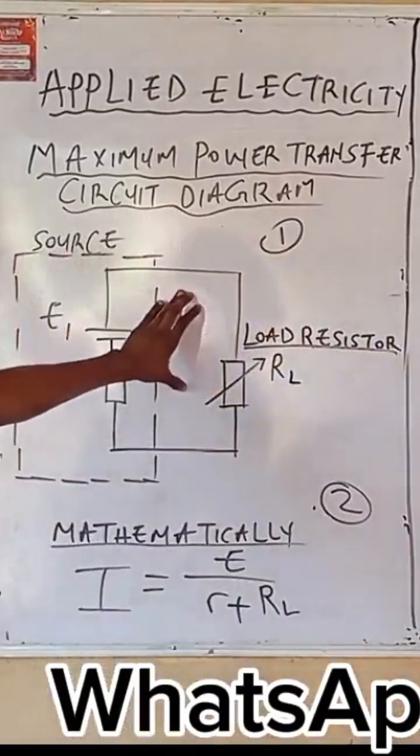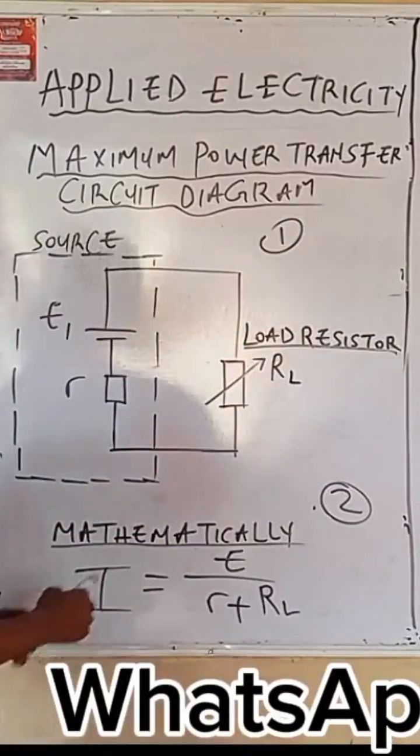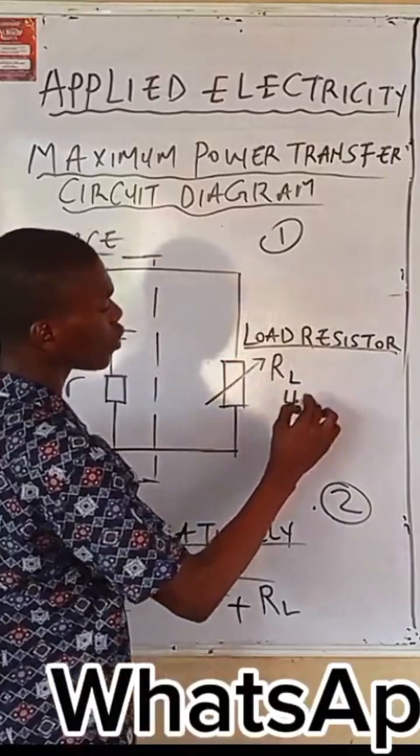Considering this circuit, let's say the value of RL for your load resistor is 4 ohms.